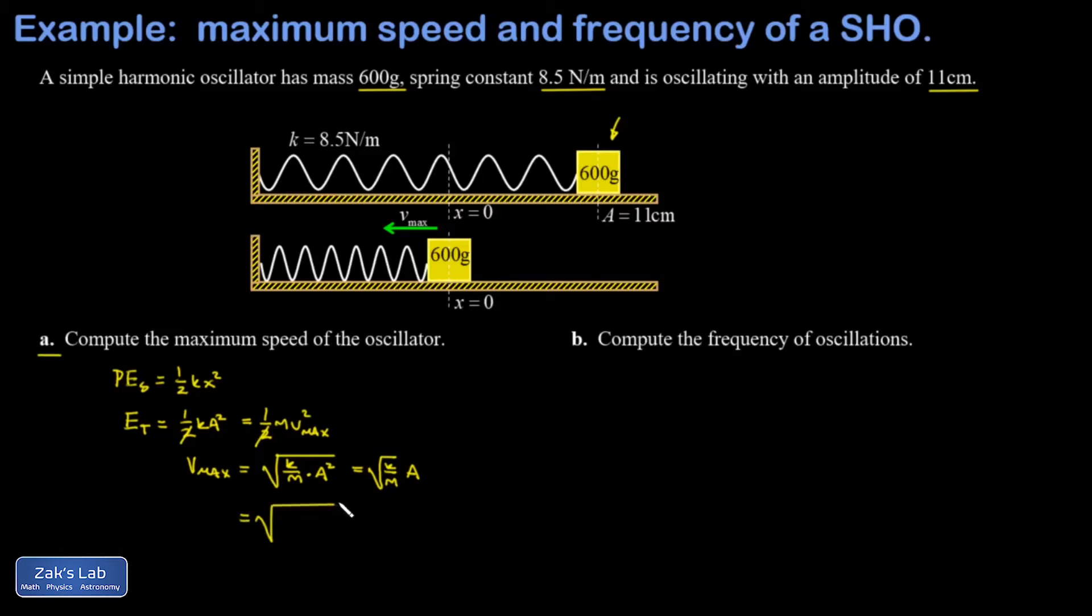Now we can plug in the numbers making sure to do all the necessary unit conversions. k was 8.5 newtons per meter, m was 600 grams that's 0.6 kilograms, and the amplitude was 11 centimeters which is 0.11 meters. The amplitude is outside of the square root. Into three significant digits I get 0.414 meters per second.